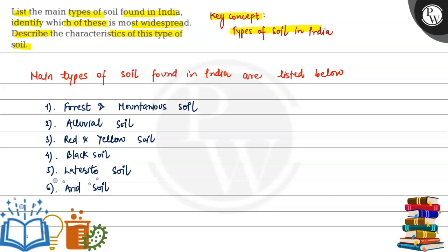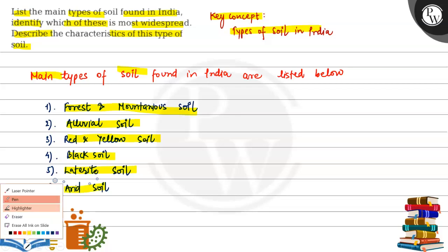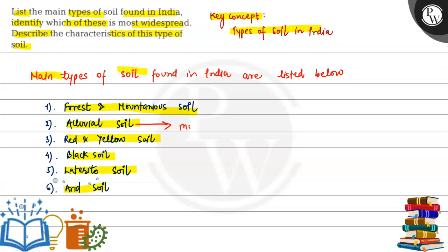There are many types of soil found in India, out of which the main types are: forest and mountainous soil, alluvial soil, red and yellow soil, black soil, laterite soil, and arid soil. Out of these soils, alluvial soil is the most widespread.